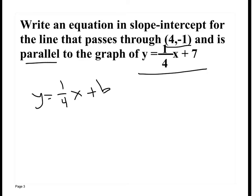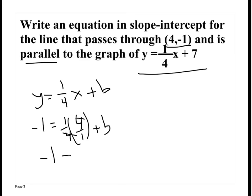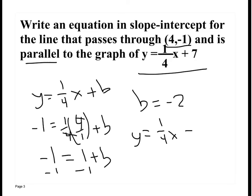Someone raise your hand and tell me what I'm going to do. Luke says I will plug in negative 1 for y and 4 for x, and solve for b. The 4s cancel, leaving negative 1 equals 1 plus b. Subtract 1 from both sides: b is equal to negative 2. So I have everything I need: y equals one fourth x minus 2.